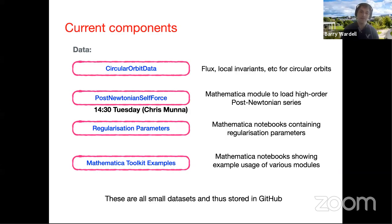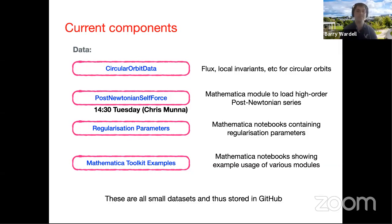There is a repository called post-Newtonian self-force, which Chris Munna will talk about tomorrow. It gathers together all of the various post-Newtonian series relevant to perturbation theory — reaching very high-order post-Newtonian series, with 22PN not unheard of. There's also a repository of regularization parameters so you don't have to type those in from papers. These are all stored on GitHub because they're small and easy to manage; once we reach larger datasets, they'll be made available on Zenodo.